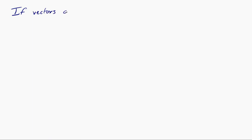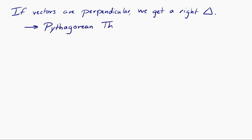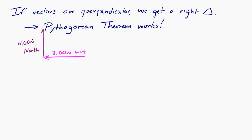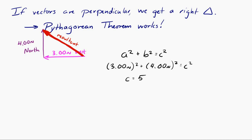If you look at this graphical addition method, one of the reasons why it's so useful is that if the vectors are perpendicular to each other, you get a right triangle, so you can use the Pythagorean theorem to find the resultant vector. Let's say I have 3 Newtons to the west plus 4 Newtons to the north. I'll draw the diagram tip-to-tail. There's the resultant vector. Using the Pythagorean theorem — a squared plus b squared equals c squared — 3 Newtons squared plus 4 Newtons squared equals c squared, so c equals 5 Newtons. Now the only tricky part is the direction of that resultant vector, which we have to give because force is a vector. We could say it points that way, but we need a better way — with an angle.